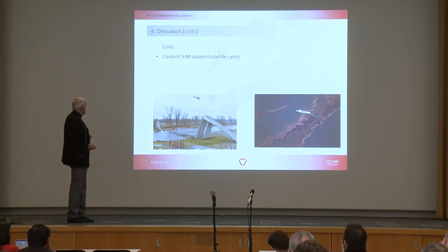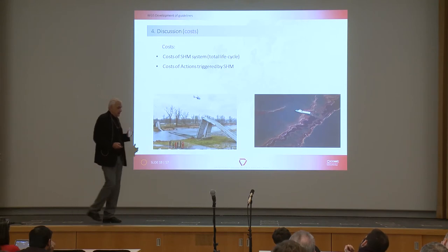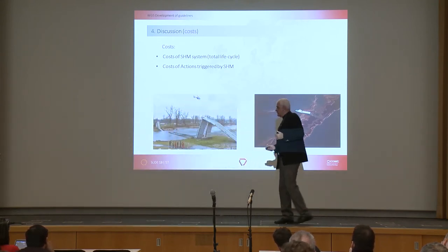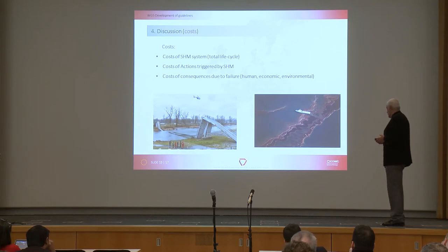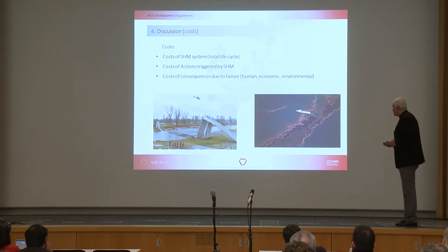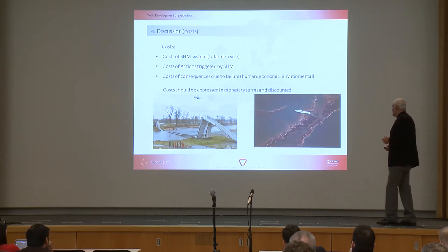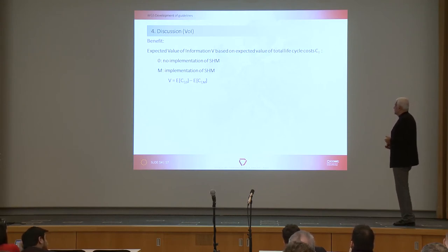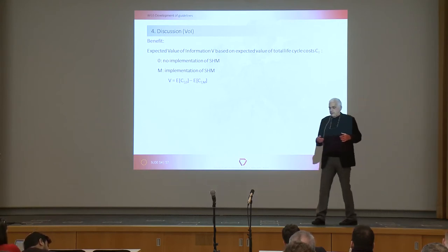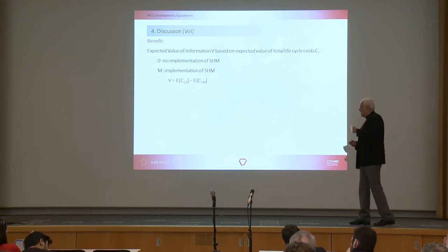Regarding costs: we have the cost of the structural health monitoring system, the total life cycle costs, the cost of actions triggered when a threshold level is reached, and the cost of consequences of failure — which as discussed include human, economic, and environmental costs such as oil spills, as we also discussed in Lisbon. All monetary terms must be discounted. The value of information is based on the expected value of total life cycle costs without using a structural health monitoring system versus with using one — giving a direct relation to costs.